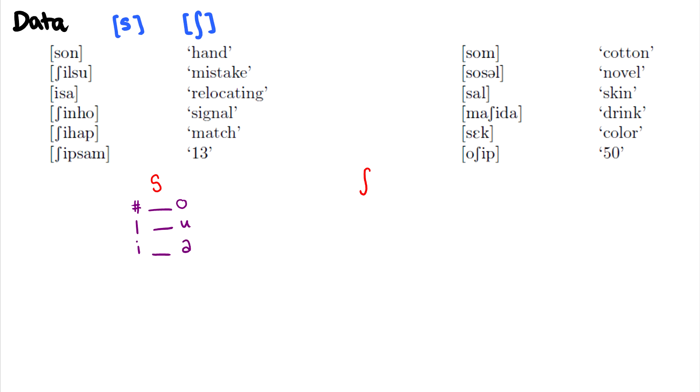So shinho there's none, shihap there's none, shipsam we have the p and an a after. In som, we have s at the beginning of the word and an o after, but we already have that environment listed once. So if we want, we can just put another check by it to say this repeats again. In sosu, we see the same thing.